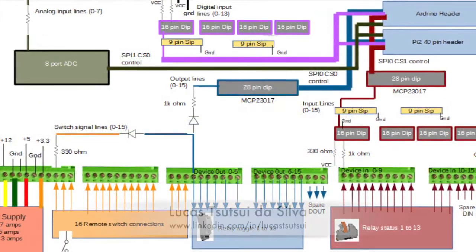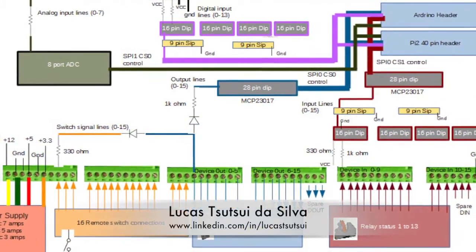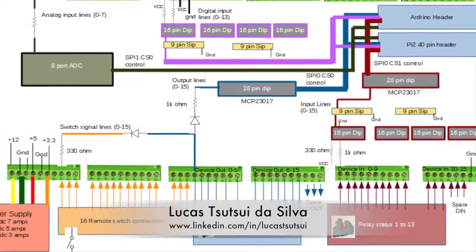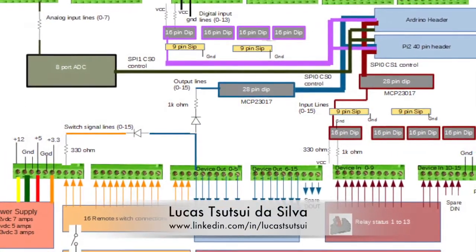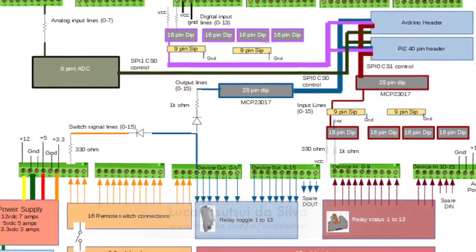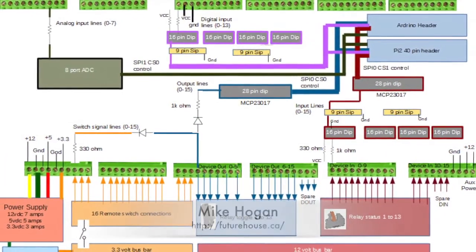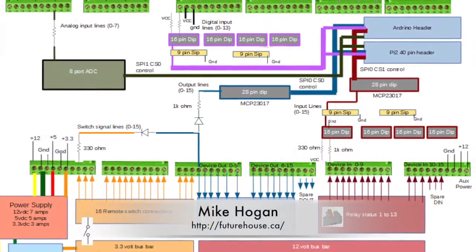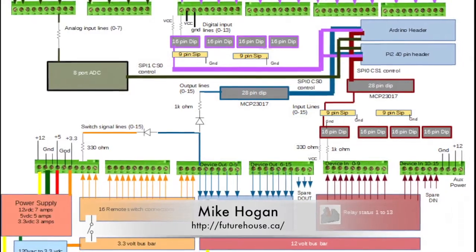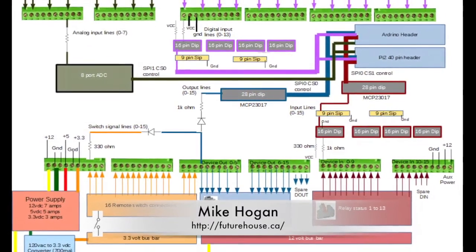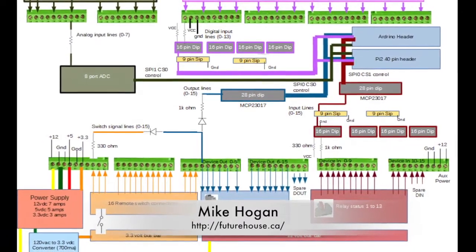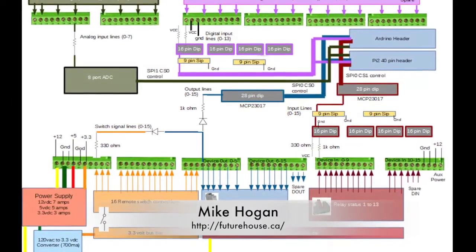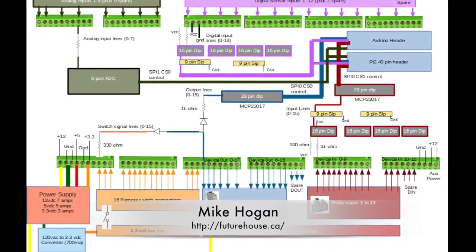Behind the scenes, Lucas Tsitsui Da Silva, a 4th year computer engineering student working under Mike's guidance, continued developing the control system connector board. The image you see here shows the latest design evolutions as Lucas and Mike start working on the specifics of minimizing space requirements and detailing how everything will fit together.